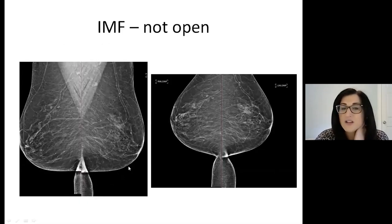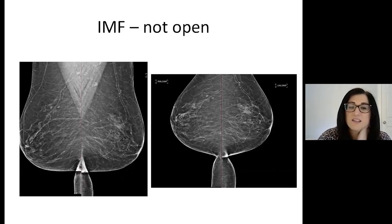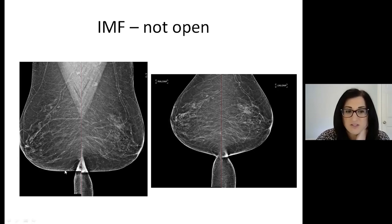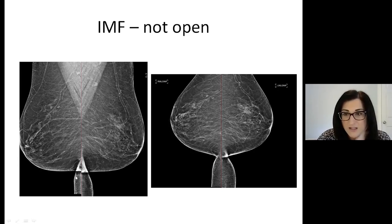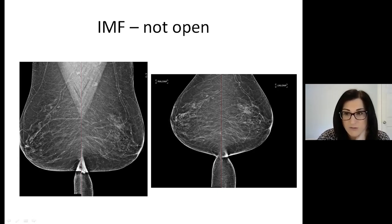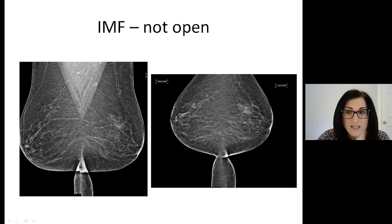Now I want to talk about inframammary folds. This is an example of an inframammary fold not being open. These are the inframammary folds — see how there's an acute angle between the breast and the abdomen? And you can see there's some tissue overlapping up here. This is a closed inframammary fold. The problem with this is there could be a mass or calcifications hiding in here, and you cannot see it because it's folded.